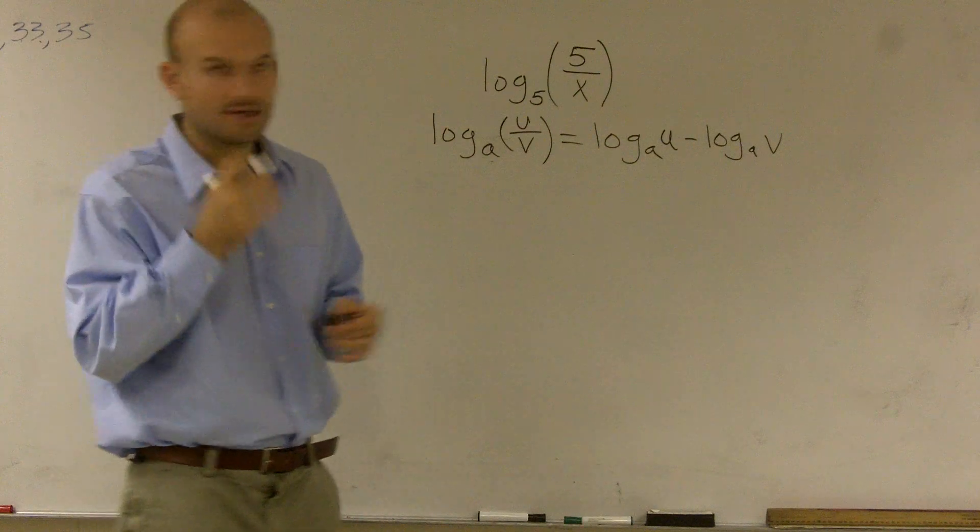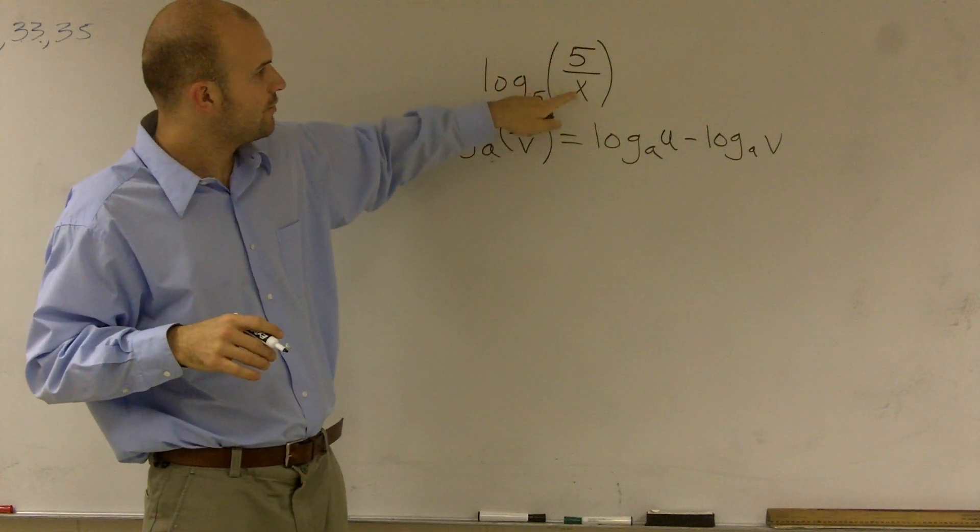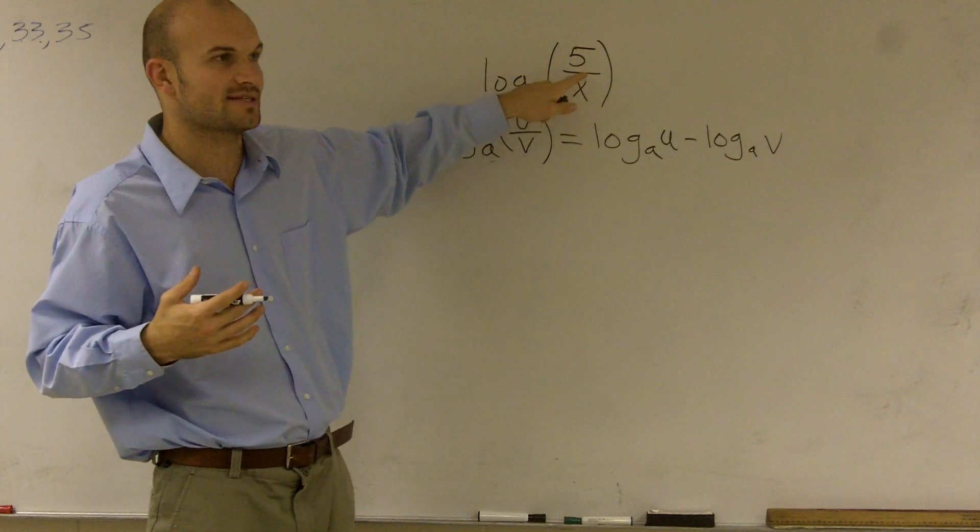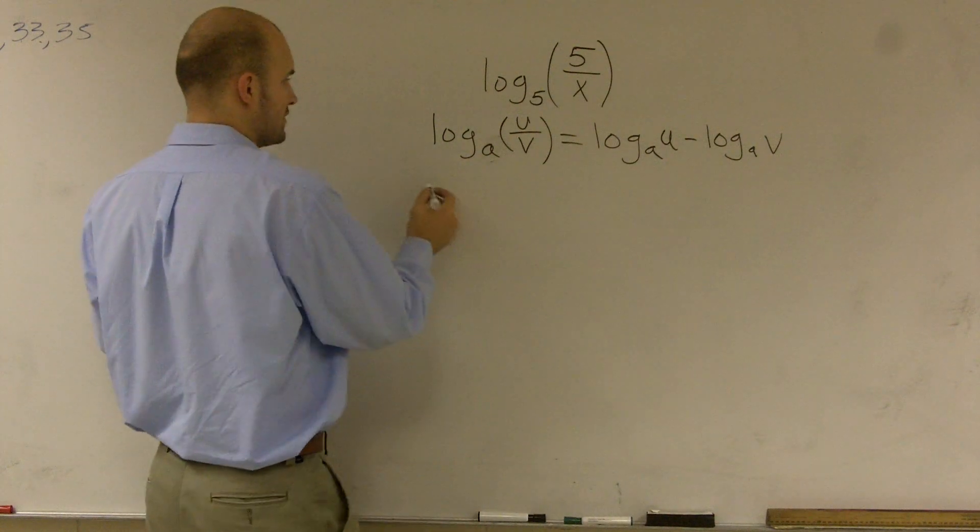Here we have another way we can rewrite this: whenever you have an x or any kind of variable down at the bottom, we can also write this as a negative exponent. So there's two different ways I want to show you how to solve this problem.